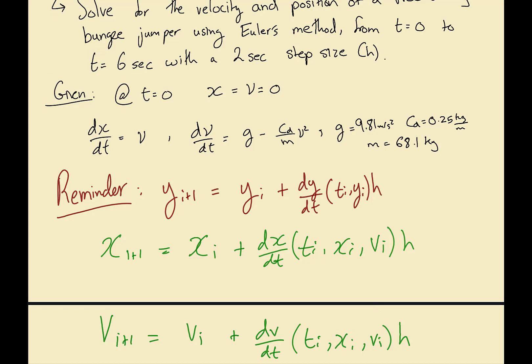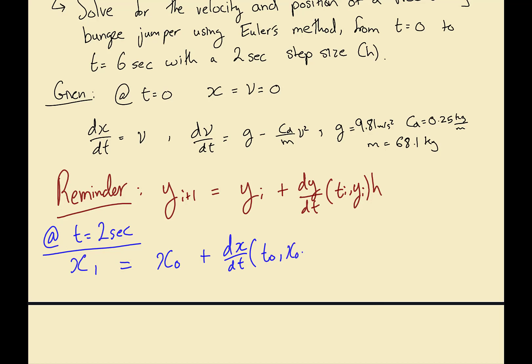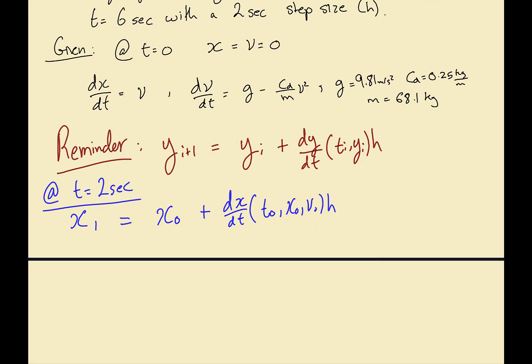Alright, let's go through this together. The first step is to find x1, the displacement at time equals two seconds (that's the first step size). We write: x1 = x₀ + (dx/dt) at the initial condition (t₀, x₀, v₀) times h. x₀ is zero, as given in the problem.